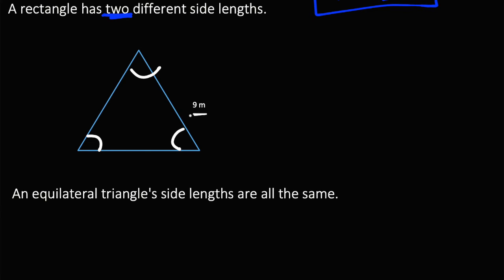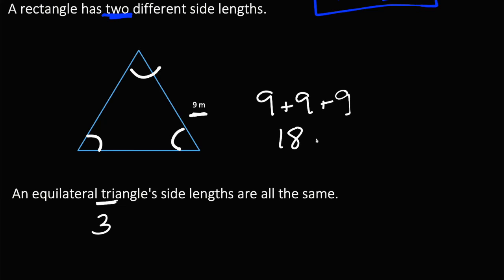An equilateral triangle's side lengths are all the same. So since it gave us that one side length is 9, we know that every single side length is 9. So we can do 9 plus 9 plus 9. It's a triangle, so tri means 3 — there are only 3 sides, unlike the rectangle and square which have 4 sides. 9 plus 9 is 18, and 18 plus 9 is 27, so we know that our perimeter is 27 meters.